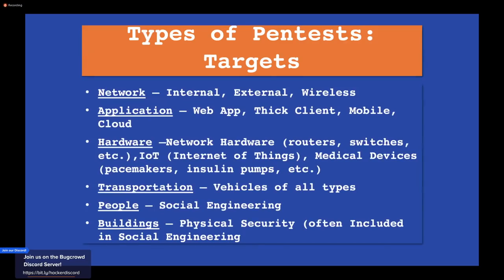Types of pen test targets: the most common ones are networks — internal, external, and wireless. Applications — web app, thick client, mobile, and cloud. Hardware hacking — network hardware, routers and switches, and newer technologies like IoT and medical devices. You want to make sure medical devices are on a secure network to prevent someone from having access to pacemakers or insulin pumps.